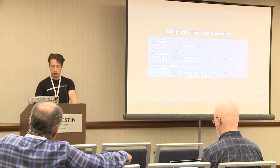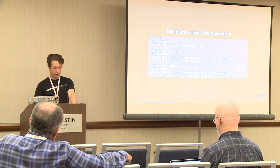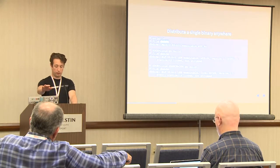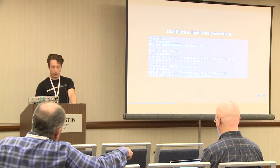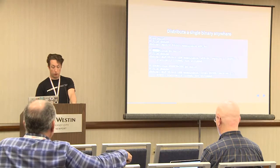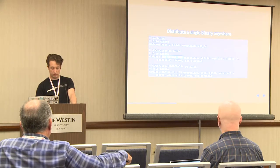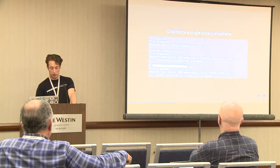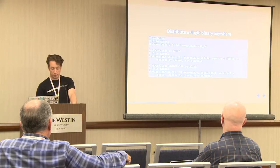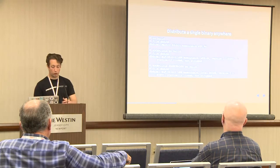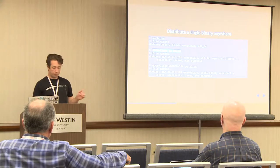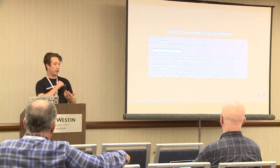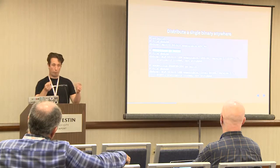You can distribute a single binary anywhere. If I run 'go build' on this project called DB Duke, I get a DB Duke binary — on my MacBook Pro, it's a 64-bit macOS binary. If I change the GOOS environment variable to Linux, I get an ELF 64-bit executable. If I change the architecture as well, I get an ELF 32-bit executable, and these are statically linked. At Procore we run 64-bit Linux everywhere, so I run this command and have a binary I can SCP up to the machine and run, or package up and ship out.